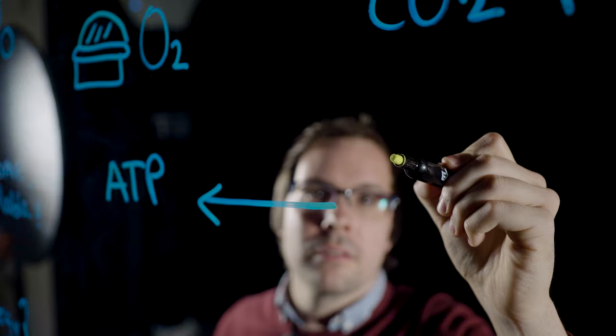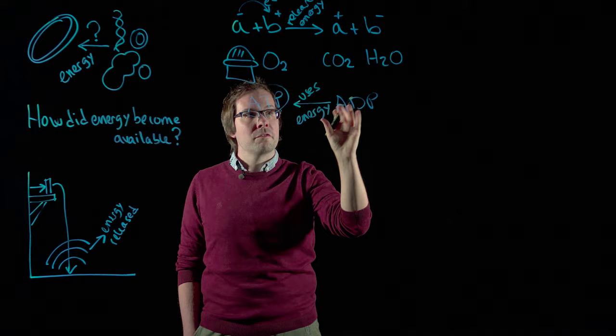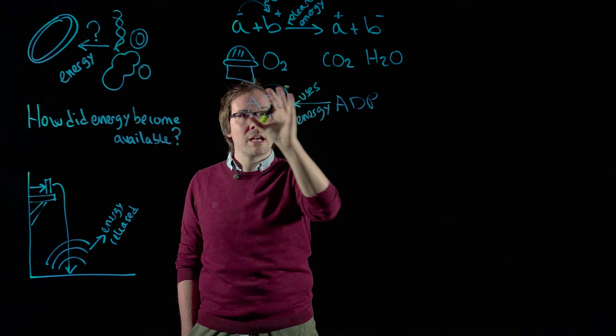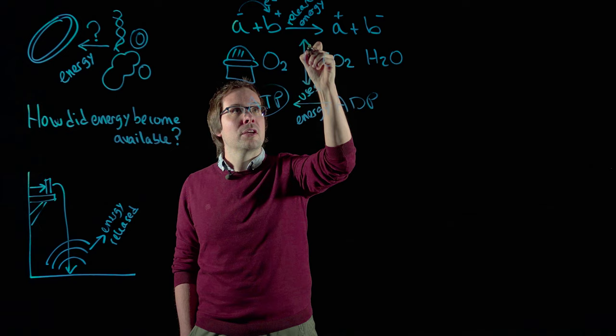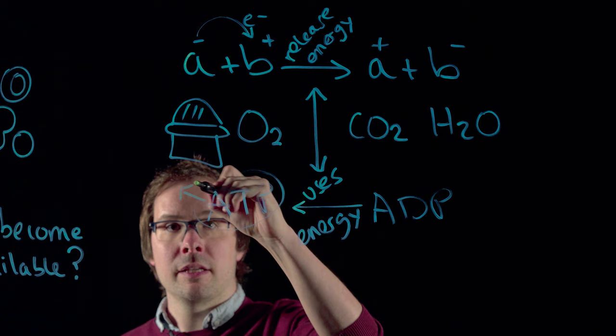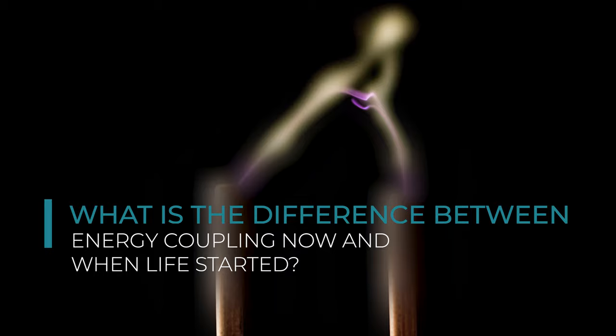And the way our bodies use it is by synthesizing a very important molecule called ATP. So for this reaction that makes ATP to happen, there needs to be a coupling of the two reactions. Once the cell has synthesized ATP, then ATP will be used for every single process within the cell that needs energy.